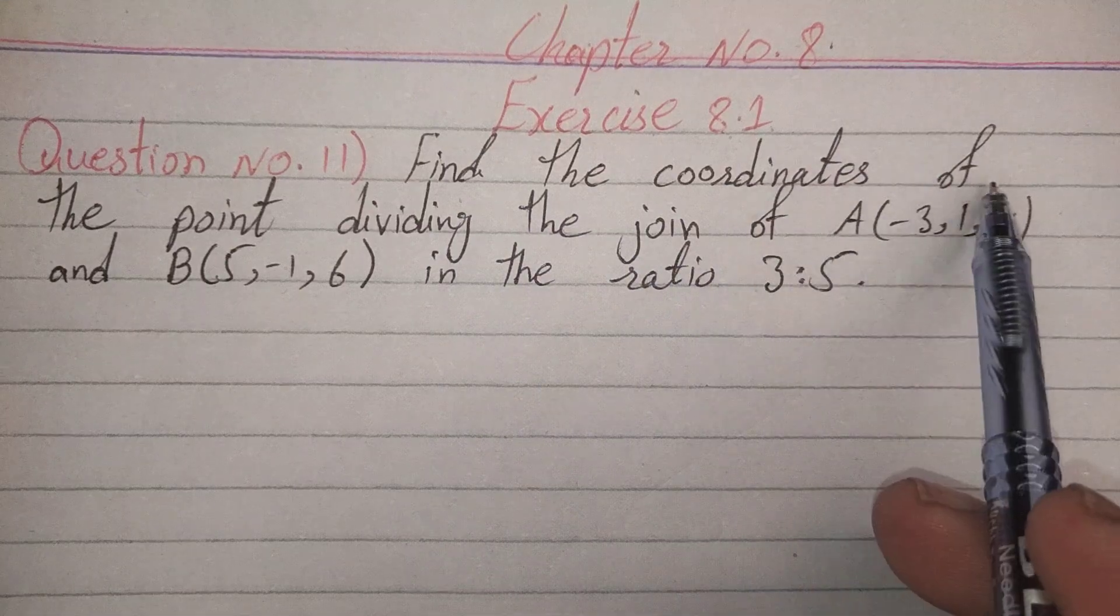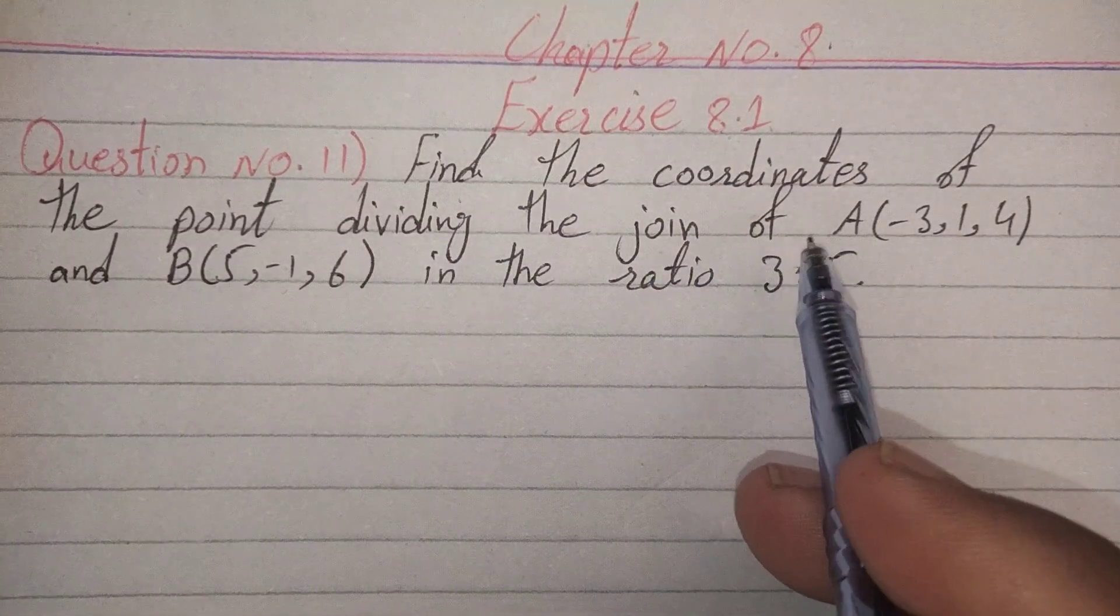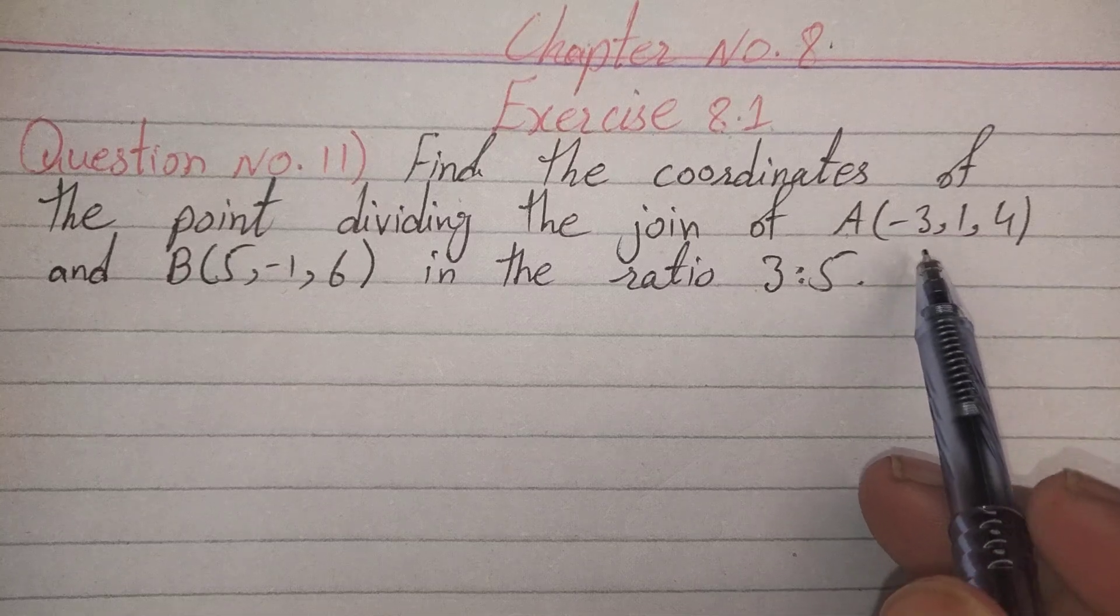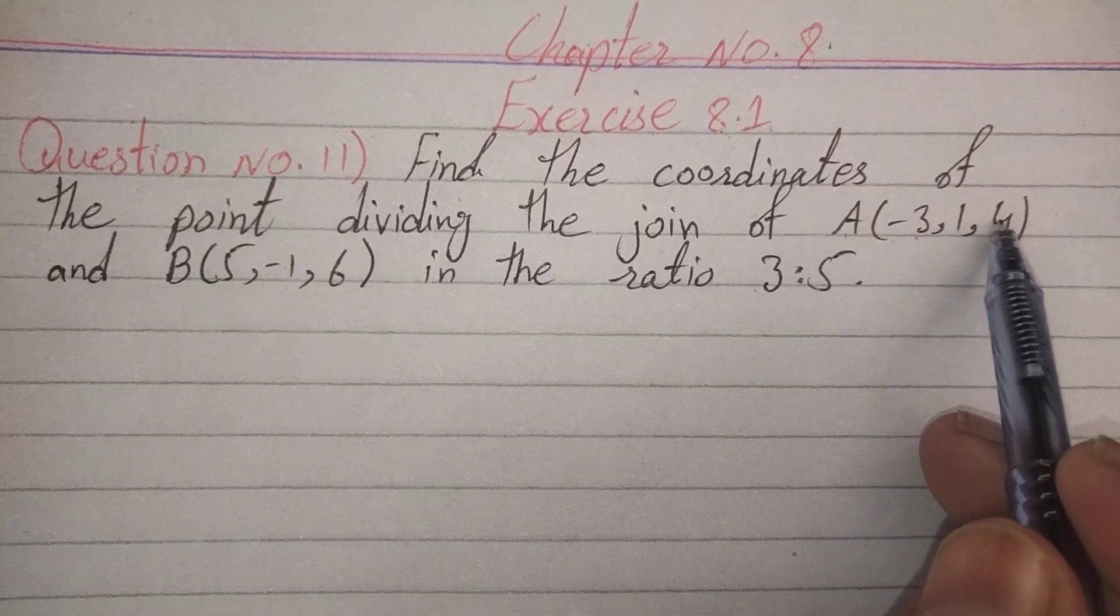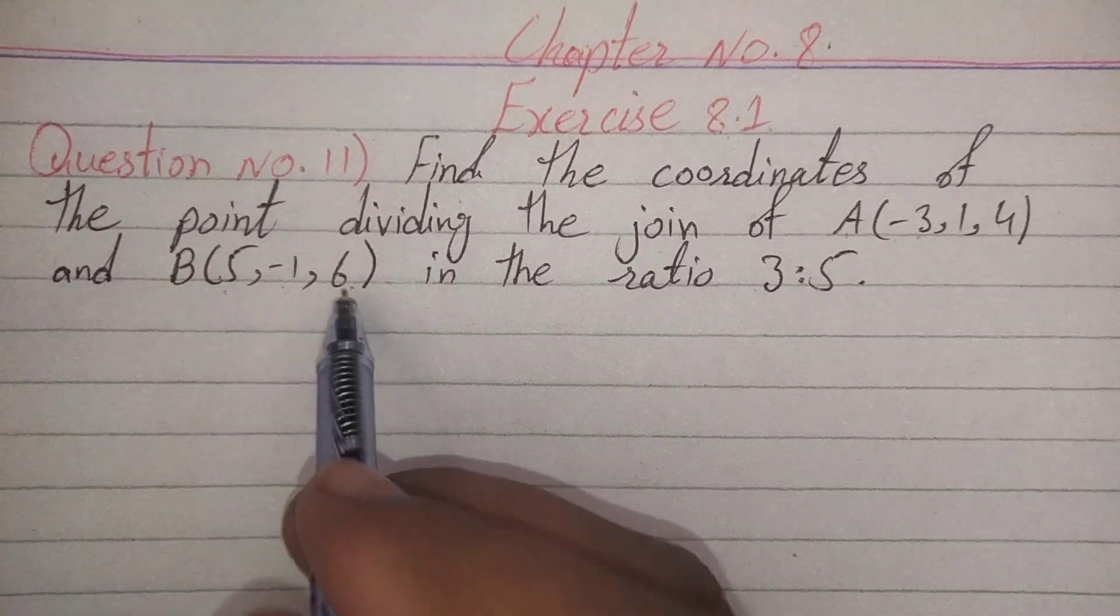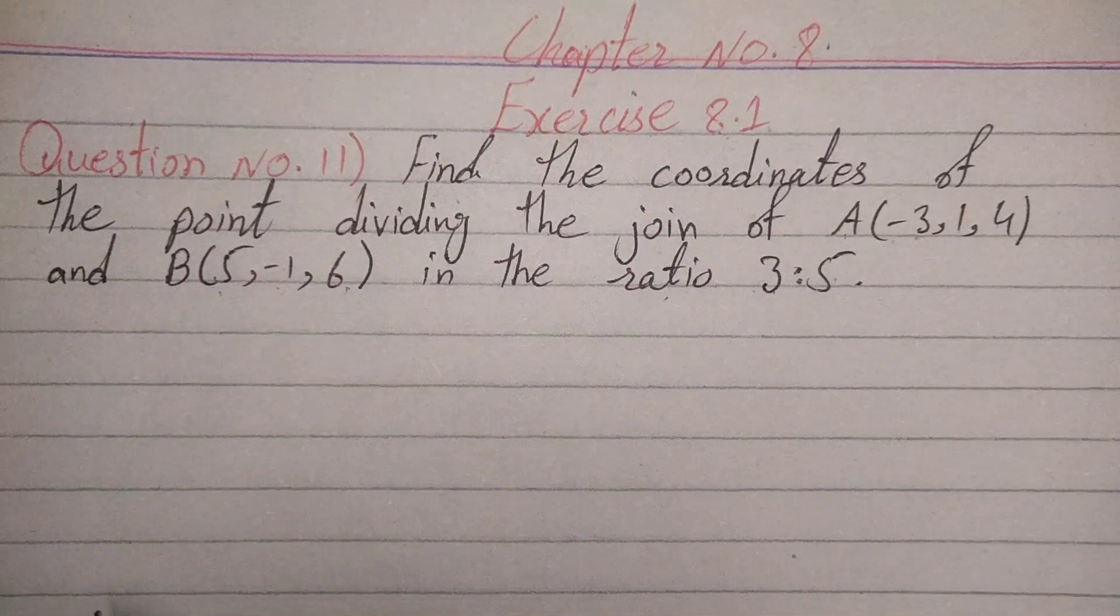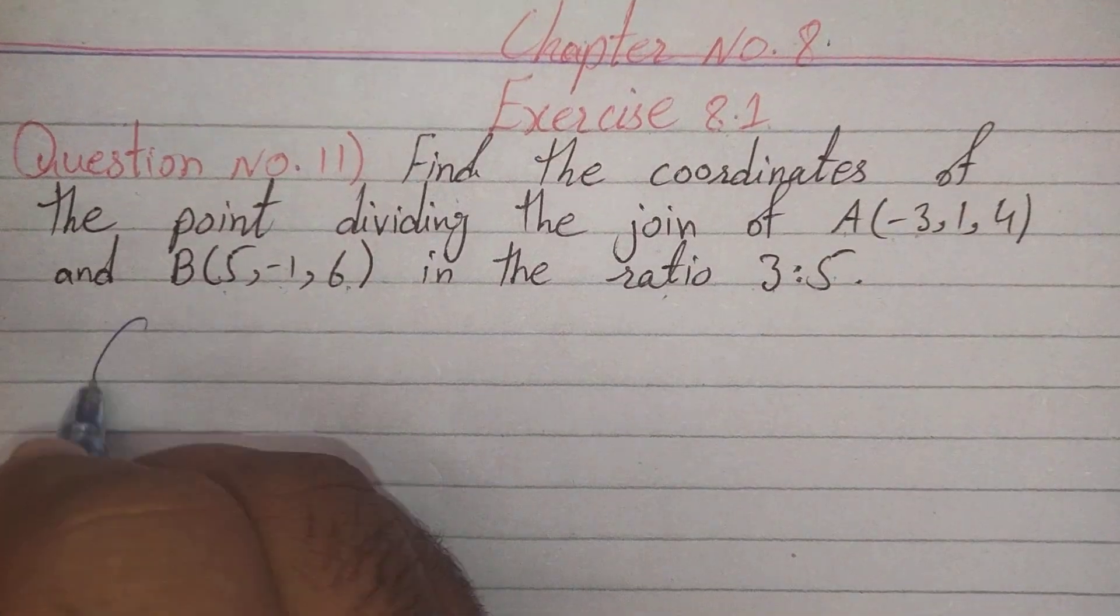Find the coordinates of the point dividing the join of A(-3, 1, 4) and B(5, -1, 6) in the ratio 3:5.